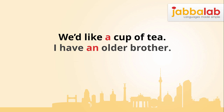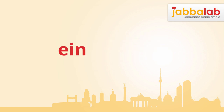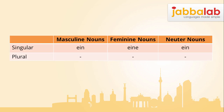The indefinite article in German is 'ein', however it can change to 'eine' depending on whether the noun it's used with is masculine, feminine, or neuter. Here is a table that shows which version you use for which gender. When talking about masculine or neuter nouns, you use 'ein'.